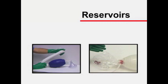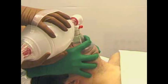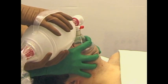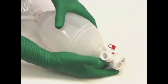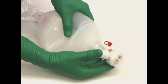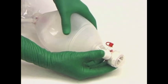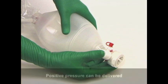The purpose of these reservoirs is to maximize the delivered oxygen concentration. A bag valve device's capability for delivering positive pressure ventilation should be tested before use. This can be achieved by sealing the bag valve device connector with the thumb and squeezing the bag with reasonable force. If it is difficult to compress the bag or if air is forced between the connector and the thumb, positive pressure can be delivered.